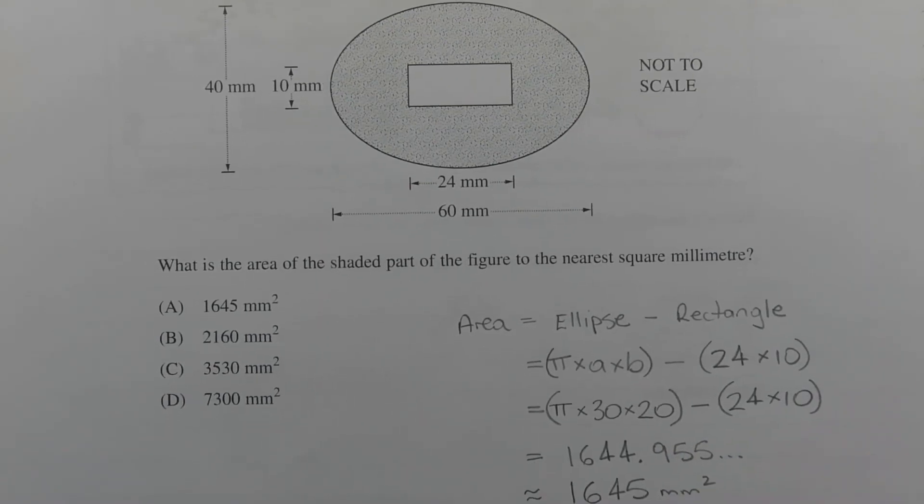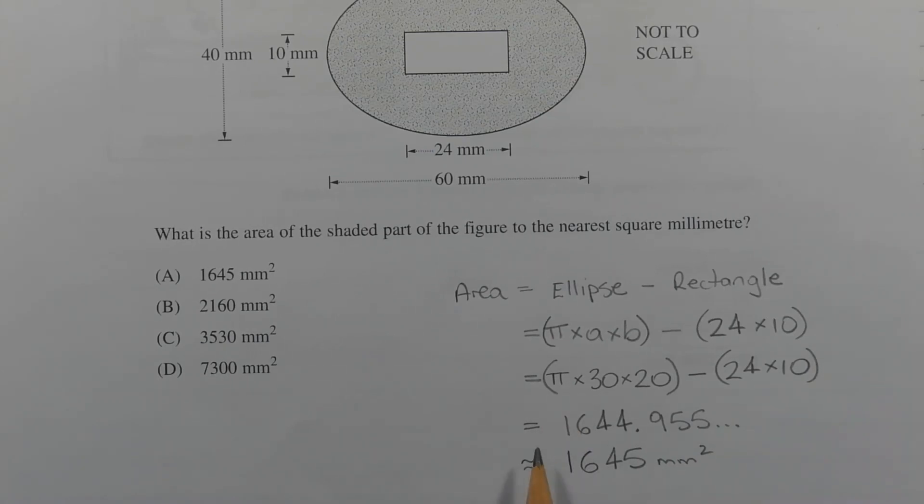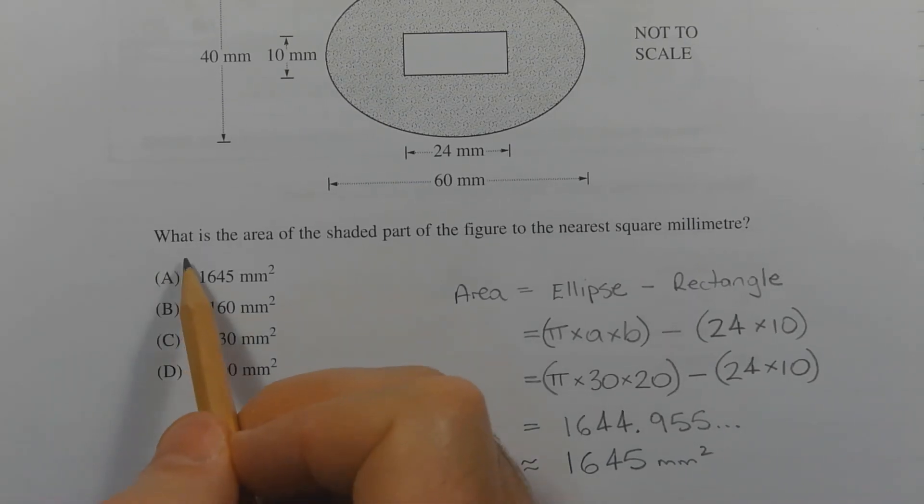Using a calculator, that evaluates to 1644.955 and so on, which rounds to 1645 square millimetres correct to the nearest square millimetre. Therefore, the answer is option A.